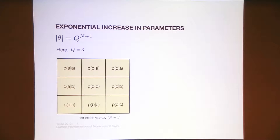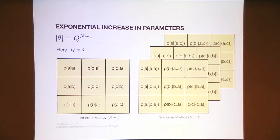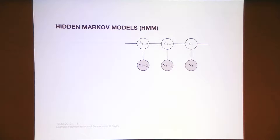To demonstrate the parameter explosion: if we model an alphabet of three characters A, B, C, the parameters of a first-order Markov model are specified by a 3x3 conditional probability distribution. Extending to a second-order model gives 27 parameters. Keep extending and the number of parameters blows up very quickly. If you have an alphabet size of Q, the parameter space is Q raised to the n.